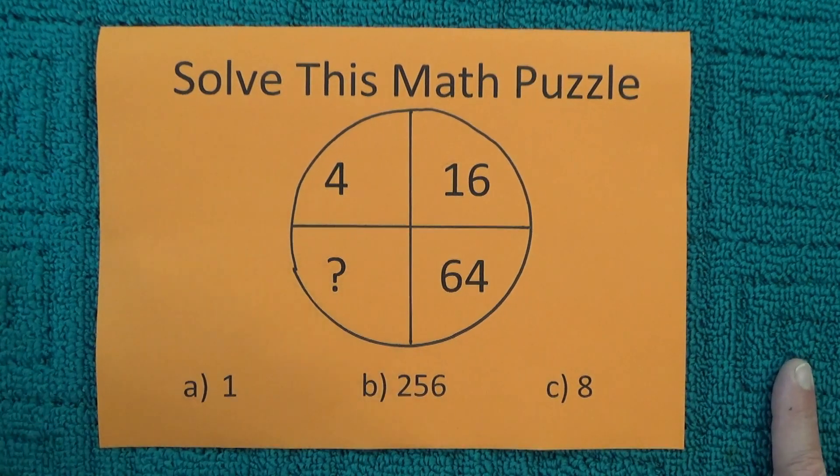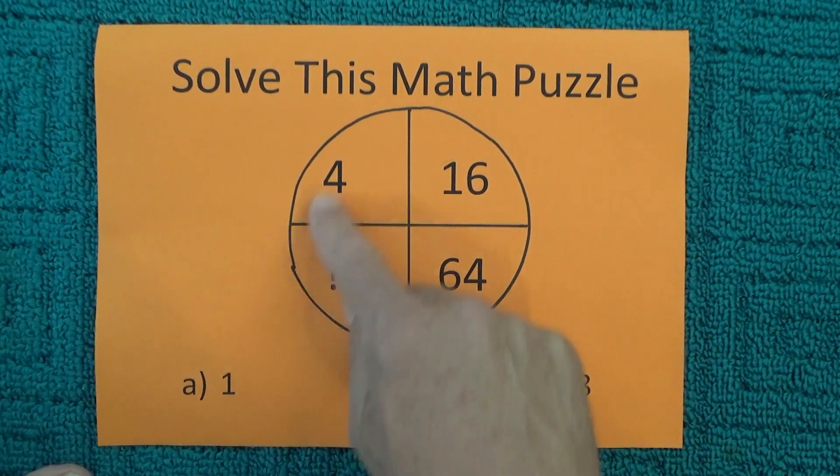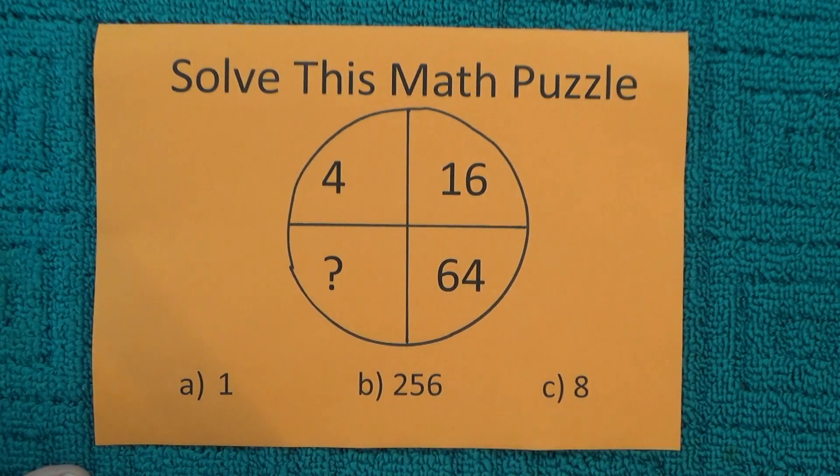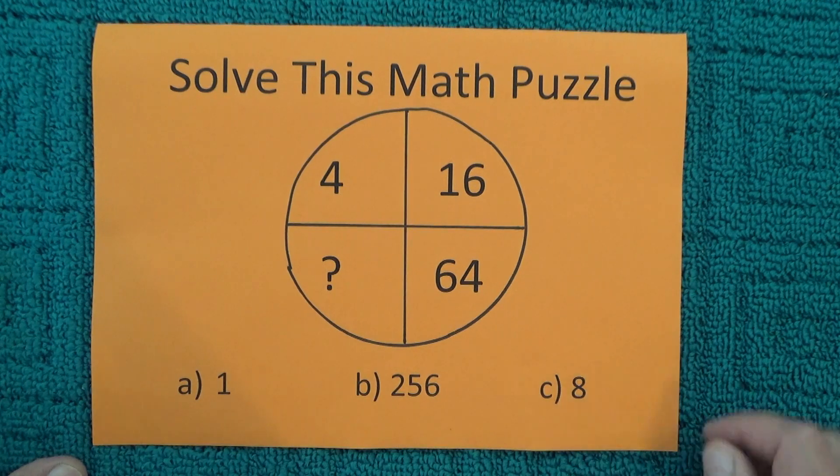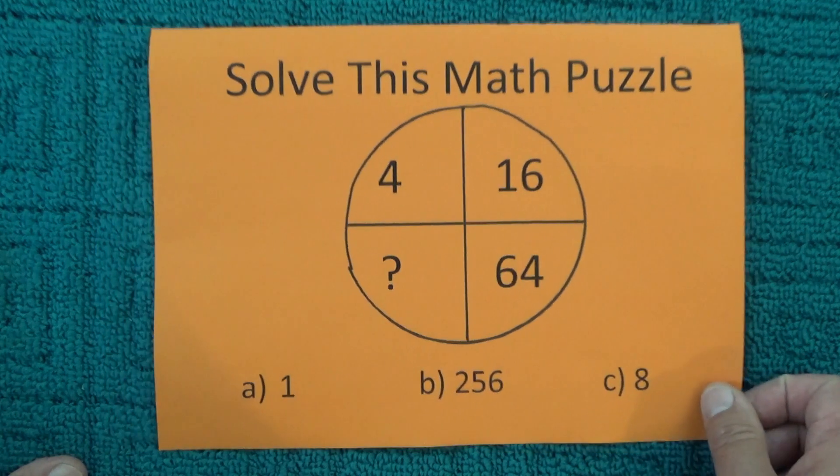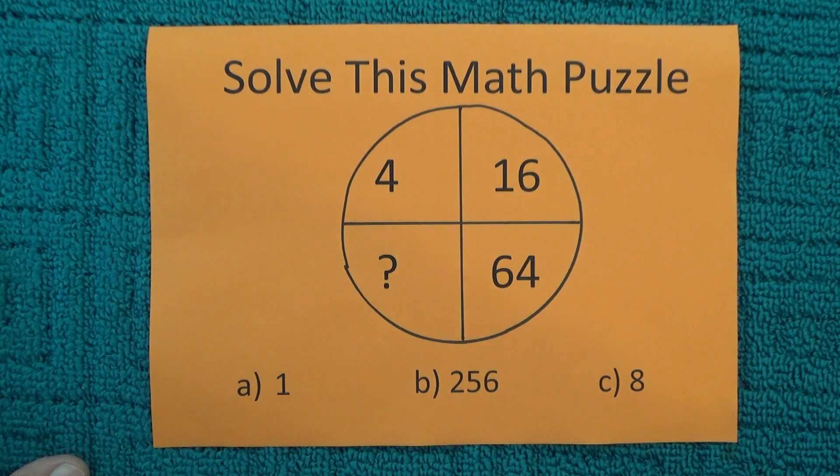So it's a good puzzle because when you first look at it, you might assume it's 256. But if you look a little bit harder, then one is also a possible answer, and also eight is a possible answer as well for this puzzle.